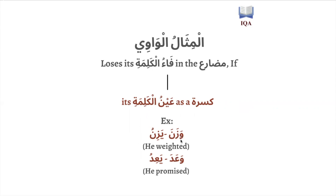Wazana and wa'ada are both mithal al-wawi because they have a weak letter in the first radical (the fa-kalima) and that weak letter is a waw. In the mudara' of wazana and wa'ada — which is yazinu and ya'idu — the ayn-kalima (the second radical: za in wazana and ayn in wa'ada) has a kasra on it. So according to the rule, wazana and wa'ada lose their fa-kalima, losing the waw in the mudara'.